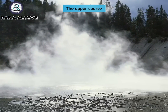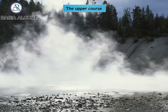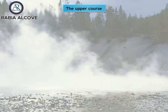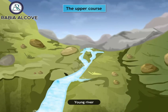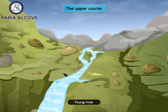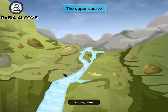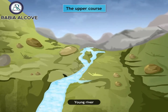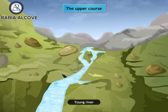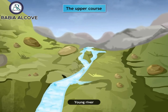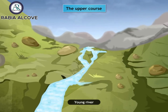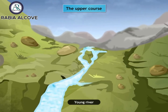Due to very steep slopes on its upper course, the flow of the water is very fast. The fast-flowing water carries sediment with it. At the upper course, a river is called a young river.